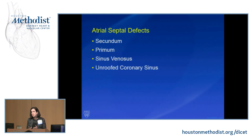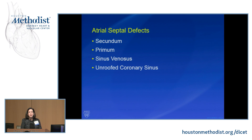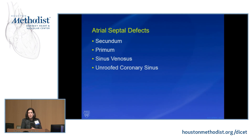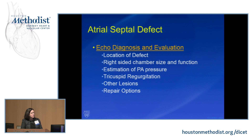There are many types of ASDs — this is not one type of condition — because the atrial septum is really complicated embryologically. There are four types of atrial septal defects, all with slightly different features: the secundum defect, which is the most common; the primum defect; the sinus venosus; and the unroofed coronary sinus. This is the order of how common they are. Let's take a look at how we're going to diagnose any of these ASDs.